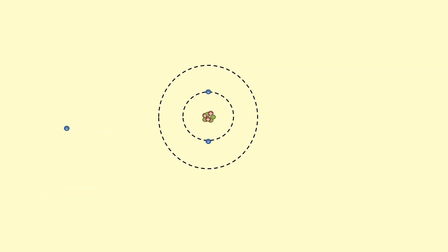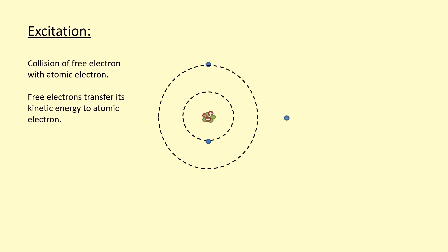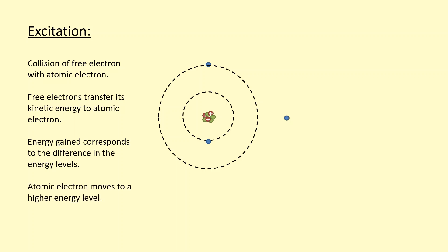Sometimes a free electron, when it collides with atomic electrons, transfers just enough kinetic energy for the atomic electron to move to a higher energy level. This is called excitation. In this case, the kinetic energy transfer has to correspond exactly to the difference in energy levels between the lower and higher energy level. So the electron moves to a higher energy level — and that's what excitation is.